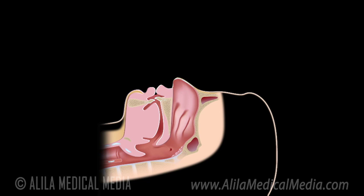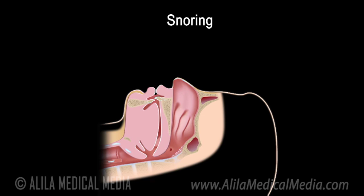In people who snore, this airway is partially obstructed by excess tissue of the throat, such as large tonsils, large soft palate, or tongue. Another common cause of obstruction is the dropping of the tongue into the throat due to over-relaxing of the tongue muscles during sleep.